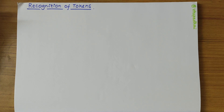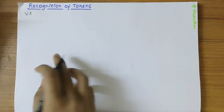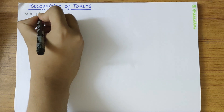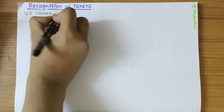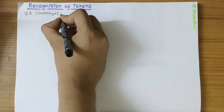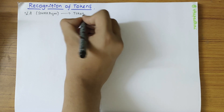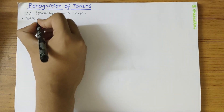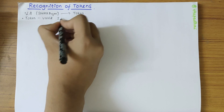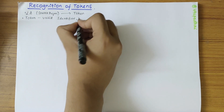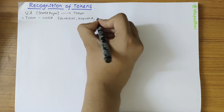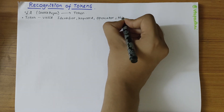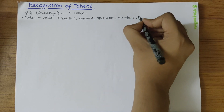In this video we'll be discussing the recognition of tokens topic. A lexical analyzer takes input — the source program — reads it character by character, and generates tokens as output. These tokens could be anything like an identifier, a keyword, an operator, numbers, or a delimiter.